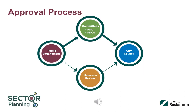Administration will prepare reports for the appropriate City Committees before going to City Council for a public hearing. Through this process, members of the public will have the opportunity to share their feedback directly with the committees and Council by submitting comments or requesting to speak. City Council will make the final decision as to whether the Sector Plan Amendment is approved. Please visit our engagement page at saskatoon.ca/engage for project updates and opportunities to participate and give your feedback. Thank you for your interest in the Blairmoor Sector Plan Amendment.